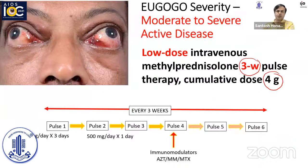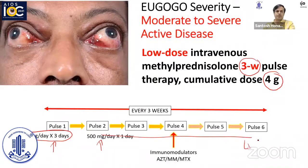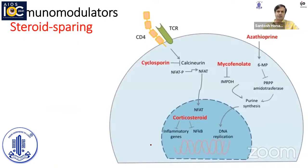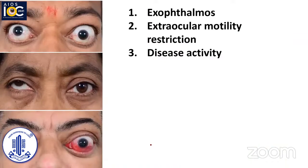We begin with a loading dose of 500 milligrams every day for 3 days — that is pulse 1 — followed by 3-weekly pulses of 500 milligrams for 6 pulses, about 4.5 months of treatment. Sometimes at pulse 4, we bring in immunomodulators, which are either azathioprine, mycophenolate mofetil, or methotrexate. Immunomodulators can be steroid-sparing and are gently handshaked with the IVMP. As we withdraw IVMP, immunomodulation would have started taking effect. We look at three endpoints: exophthalmos, extraocular motility restriction, and disease activity.